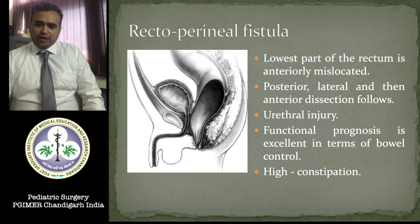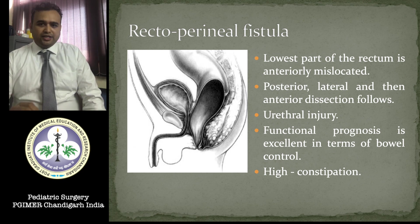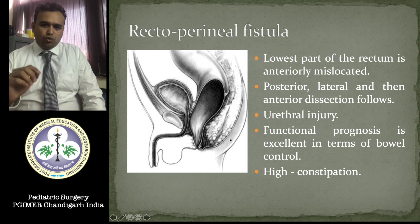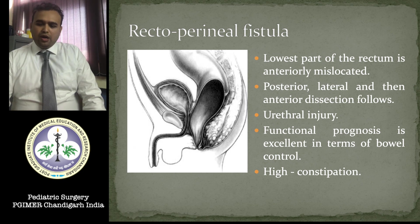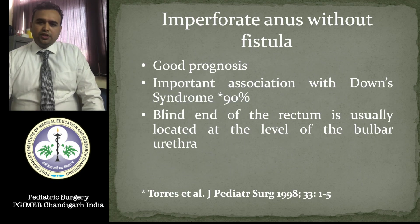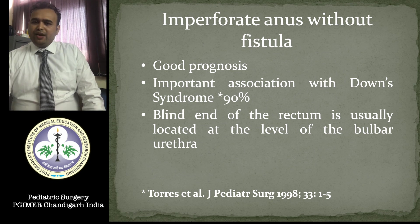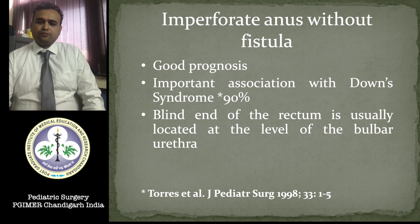Patients with anterior ectopic anus — better termed recto-perineal fistula — require a minimal PSARP with posterior and lateral dissection. During anterior dissection, care must be taken as the anterior wall is very near to the urethra. These patients are known to have constipation post-operatively. Patients with imperforate anus without fistula have a good prognosis; 90% are associated with Down syndrome, it is a blind-ending rectum at the bulbar urethra without fistula, and a primary PSARP has been successful in these patients.